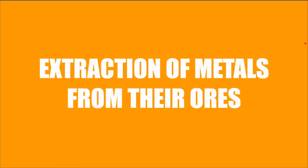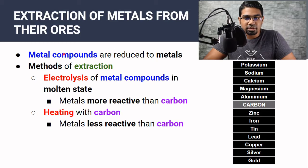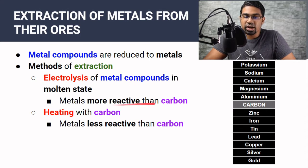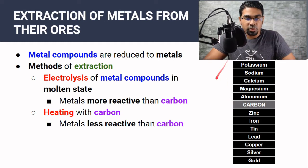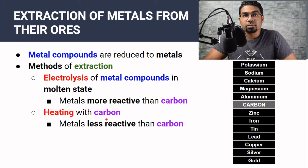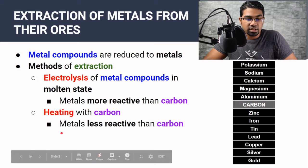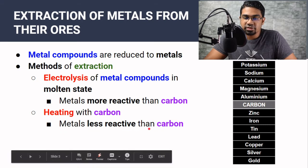Extraction of metals is mainly done in two ways. One is by electrolysis — these are metals that are more reactive than carbon, higher than carbon in the reactivity series of metals. The other way is by heating with carbon, which is normally done in a furnace such as a blast furnace, and this is for metals that are less reactive than carbon.